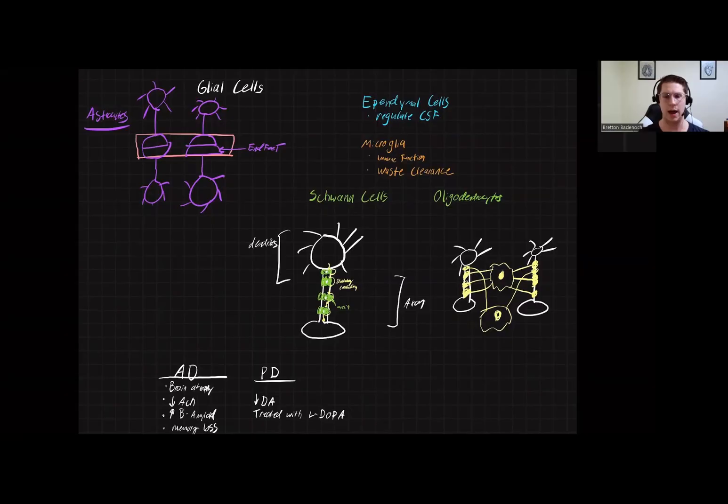Today, we are going to briefly discuss the roles glial cells have in the central nervous system and peripheral nervous system that you need to know for the MCAT. We are also going to close by looking at some of the most important neurodegenerative diseases you need to know for the MCAT.